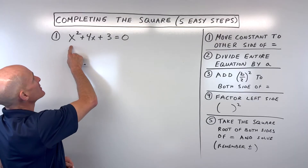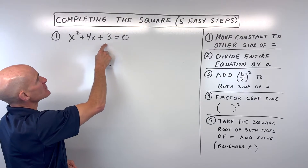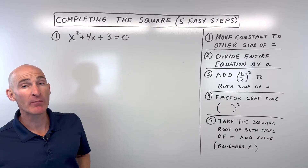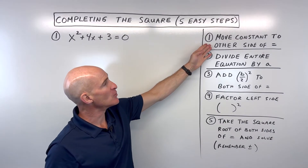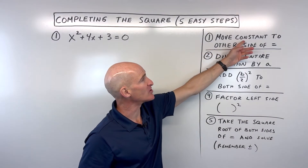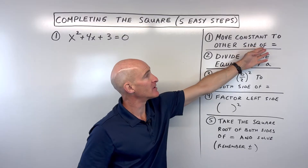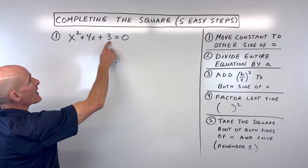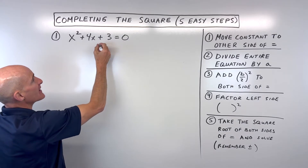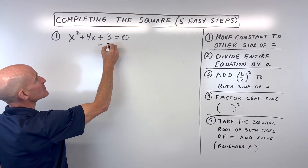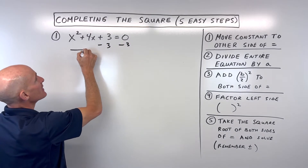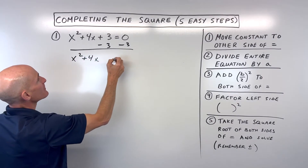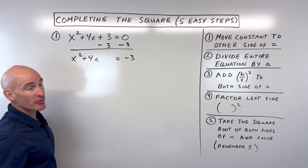So this equation here, x squared plus 4x plus 3 equals 0, we want to solve it by using the completing the square method. The first step is you want to move the constant, which is the number, to the other side of the equal sign. So we're going to subtract 3 from both sides, and now we have x squared plus 4x is equal to negative 3.